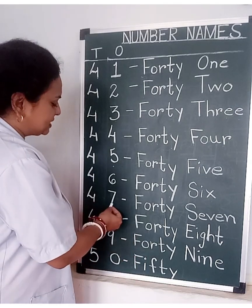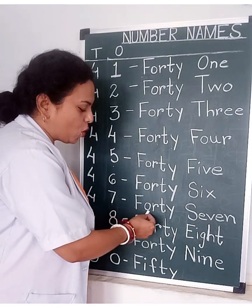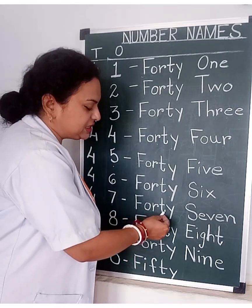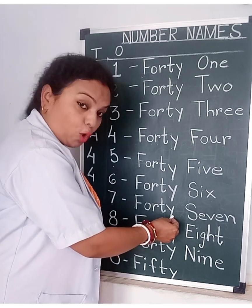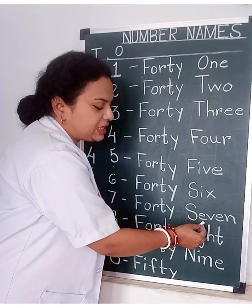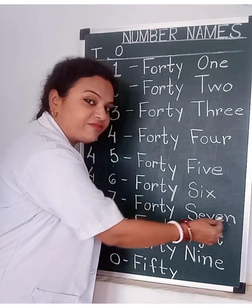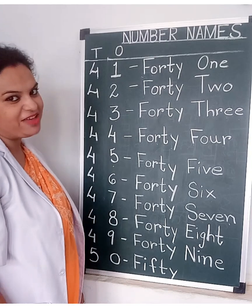4, 7 — 47. F, O, R, T, Y — FORTY. S, E, V, E, N — SEVEN. 47.